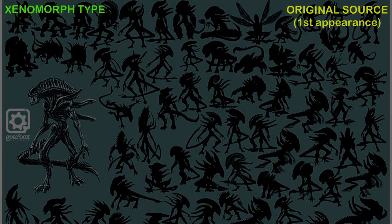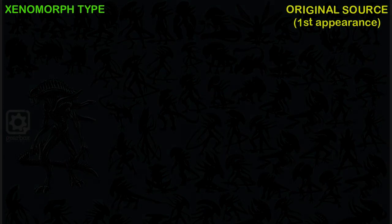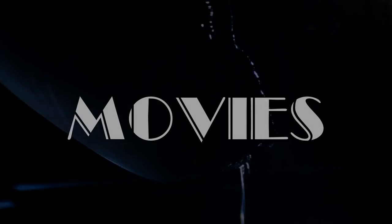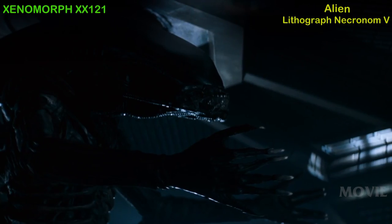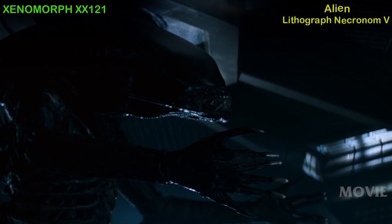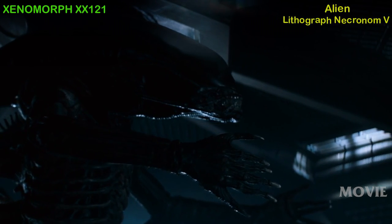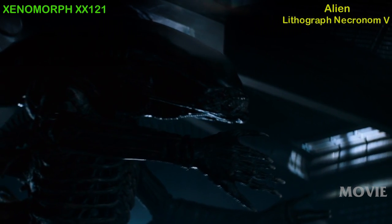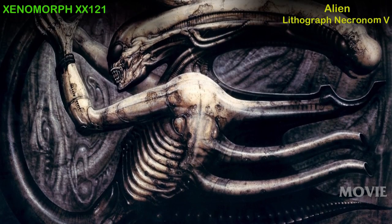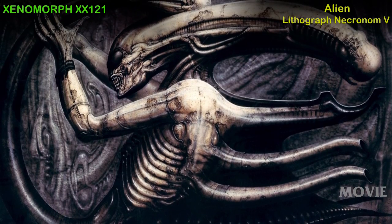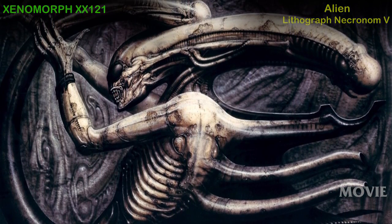Xenomorph type and original source — Movies. Xenomorph XX-121, also generally known as the Xenomorph or Alien. First appearance: the movie Alien, 1979, originally based off of H.R. Giger's lithograph Necronome 4 of 1976.